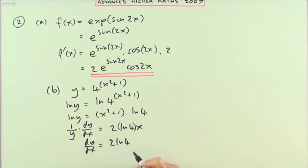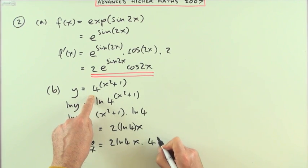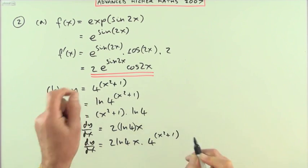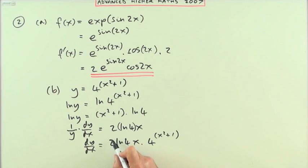x times, instead of just writing y, I'll write what y was equal to—times 4^(x²+1). And there's not a lot I could do to tidy that up really, apart from maybe emphasizing again the fact that that's just a constant.